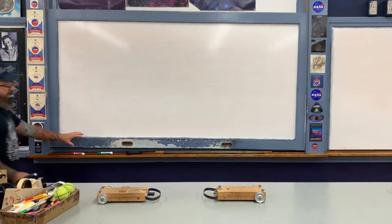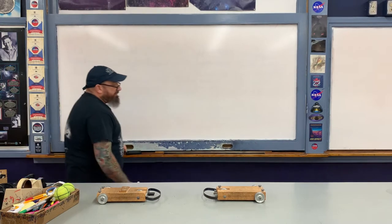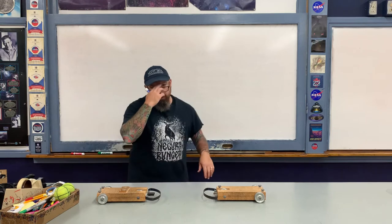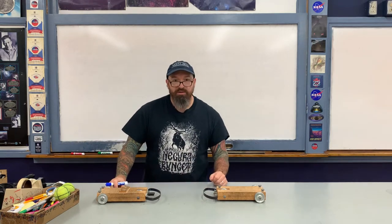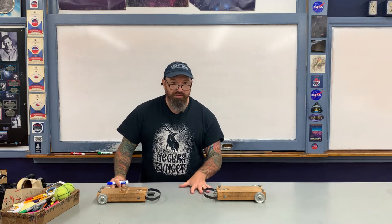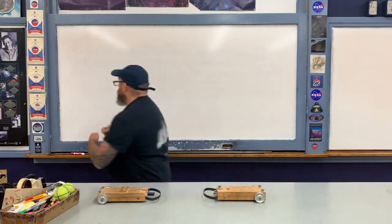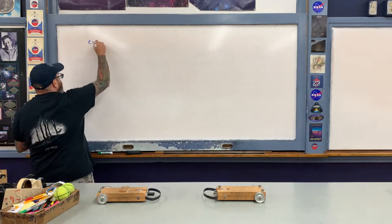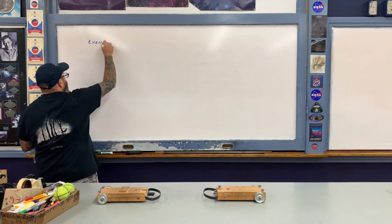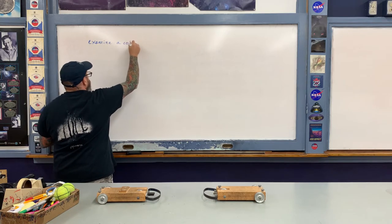The graph that we use to describe the internal forces that one cart exerts upon another is a graph of force as a function of time. Let's examine a collision.